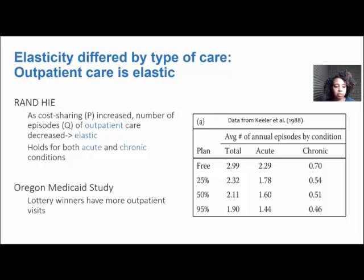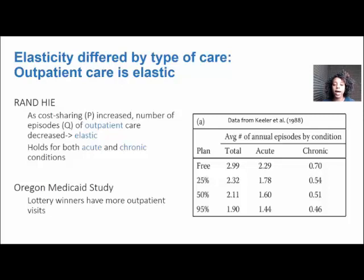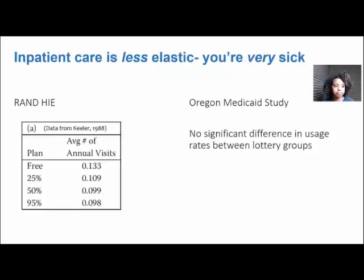Outpatient care is fairly elastic in the RAND experiment — as price increases, quantity of care demanded decreases, both for acute and chronic health care conditions. In the first column under total, those on the free plan had almost three episodes of outpatient care utilization on average, while those paying 95% of the cost had significantly fewer. In the Oregon Medicaid experiment as well, lottery winners had more outpatient visits.